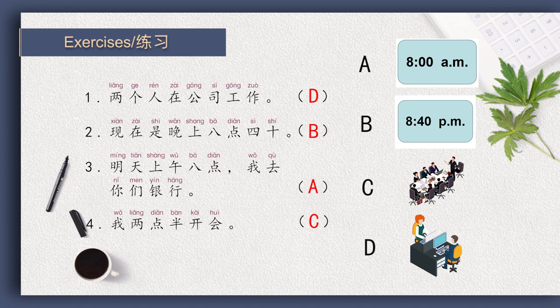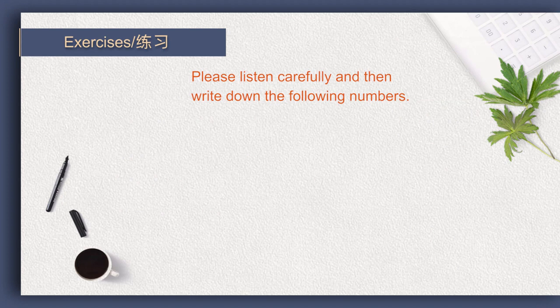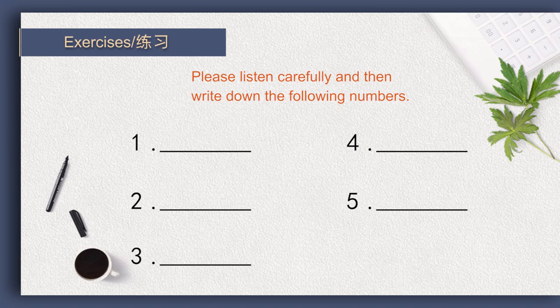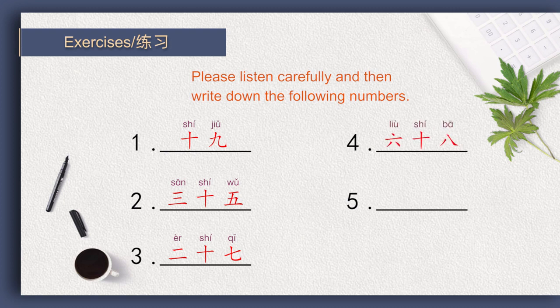很好. Now please listen carefully and write down the following numbers. 十九, 三十五, 二十七, 六十八, 四十一. The answers: the first one is 十九 (19), the second is 三十五 (35), the third is 二十七 (27), the fourth is 六十八 (68), the fifth is 四十一 (41).